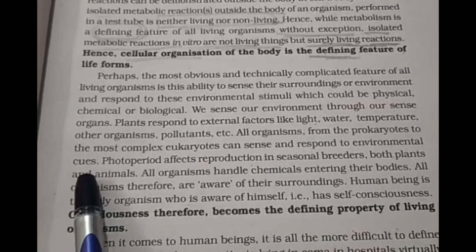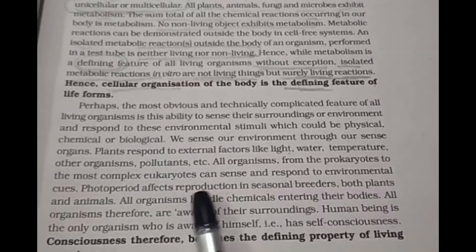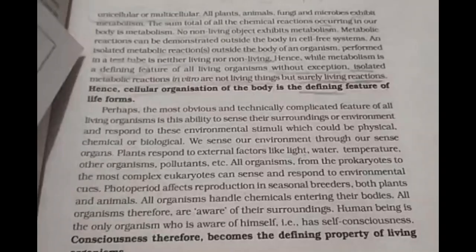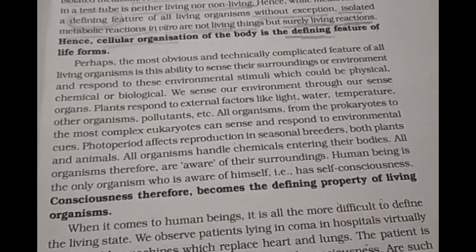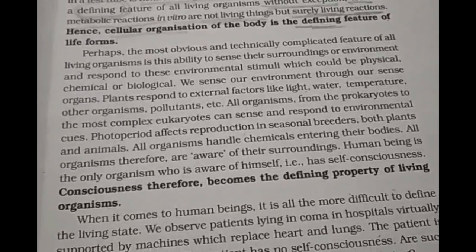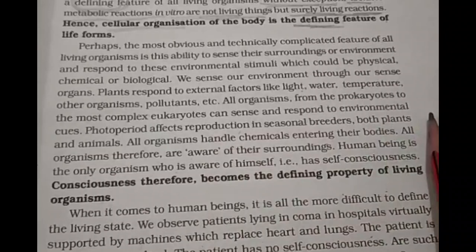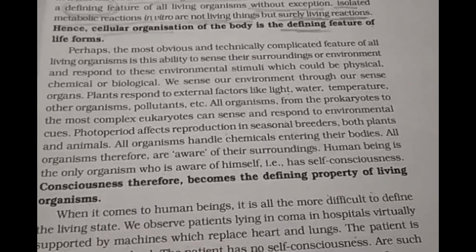All organisms, from the prokaryotes to the most complex eukaryotes, can sense and respond to environmental stimuli. Photoperiods — that is, the duration of day and night — affect reproduction in seasonal breeders, both plants and animals. Continuous breeders are not affected by day/night duration or season.